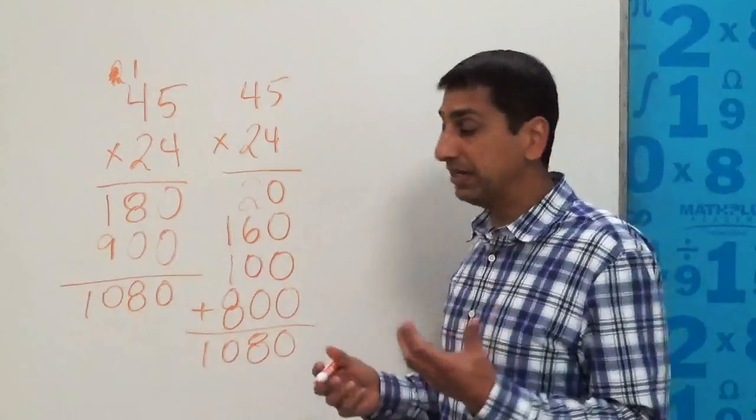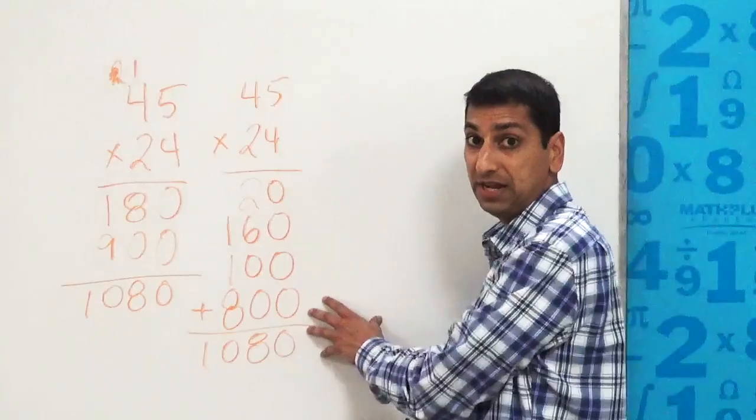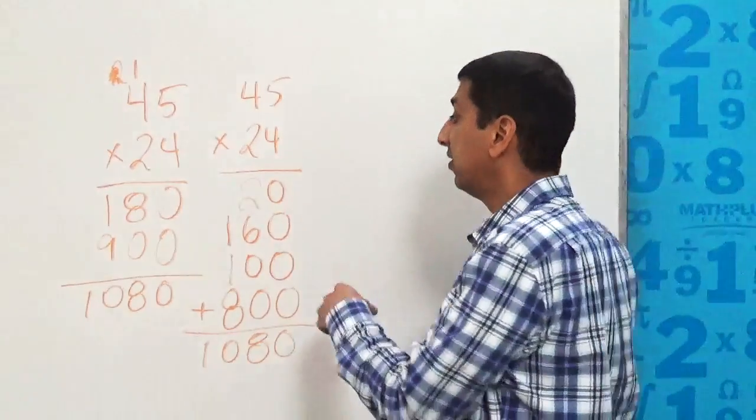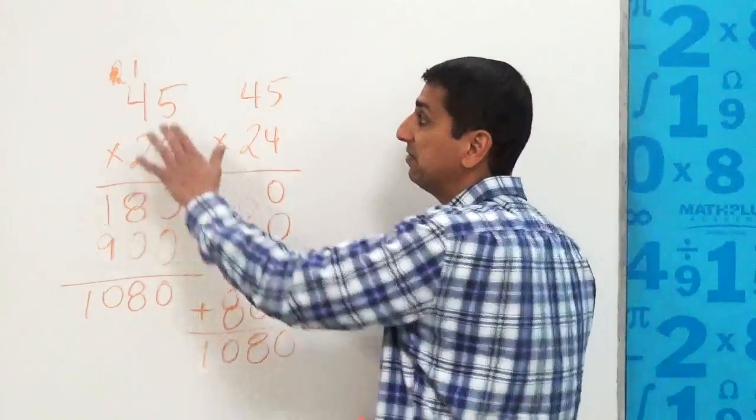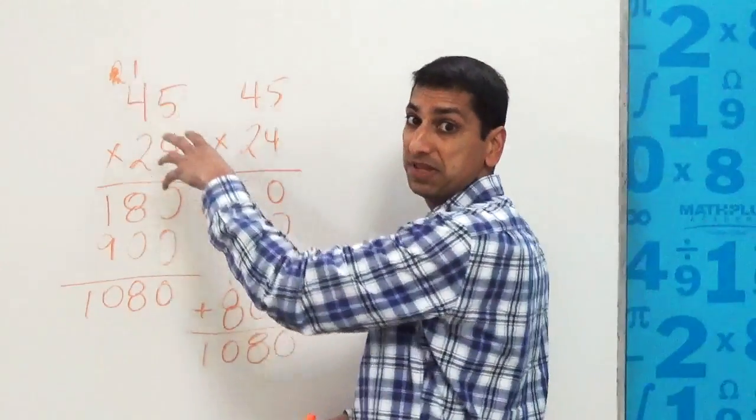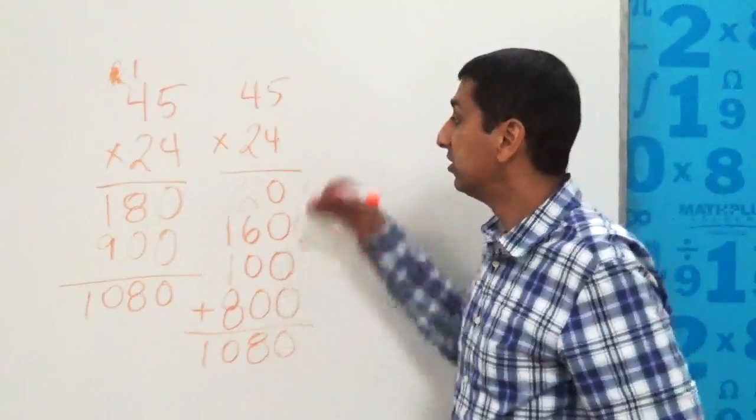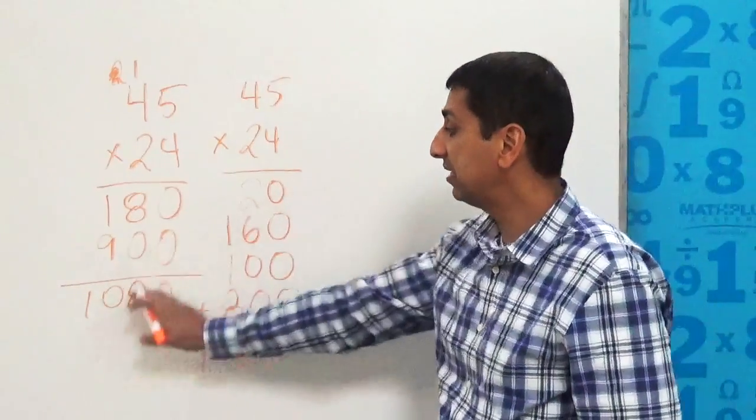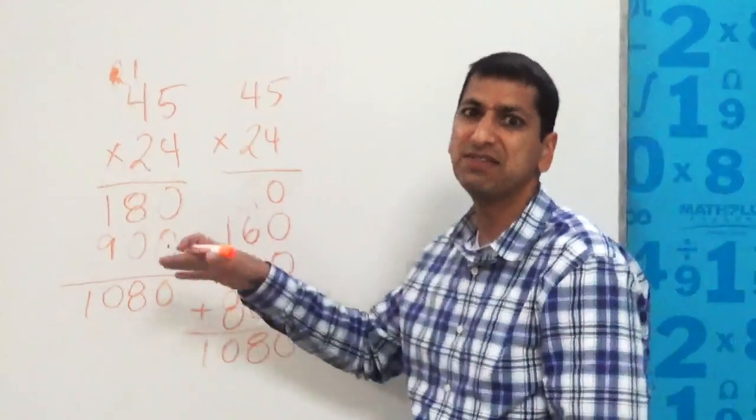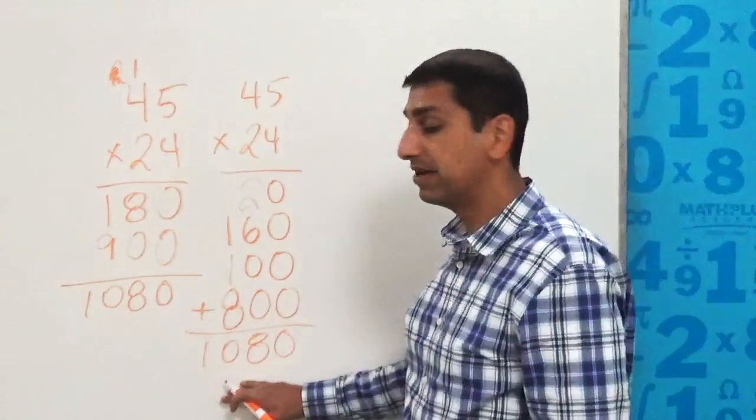Now, you might say, well, this isn't very efficient. Look how many steps that was. Look how many things I had to write down. And you're right, but we now have a conceptual understanding of place value. We're not having to write numbers up here and scribble them out, which is a bit confusing. And we're still getting the same result. So we'll teach this to students first so they understand what's going on. Later we can teach them the shortcut so they can save a tiny bit of paper to get to this answer.